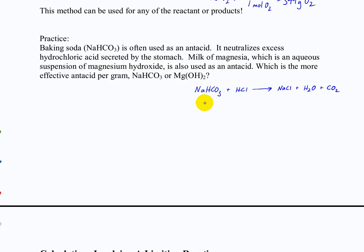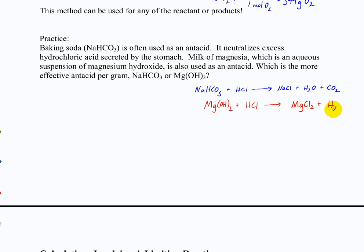Now let's look at magnesium hydroxide — we're also going to react that with HCl. There's no CO₂ formed here because there's no carbon, so this produces magnesium chloride and water. This is a standard acid-base reaction. Is that balanced? No — we need two HCl and two water. So those are our two reactions: both antacids reacting with acid.